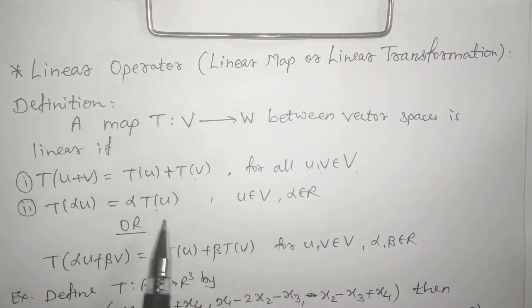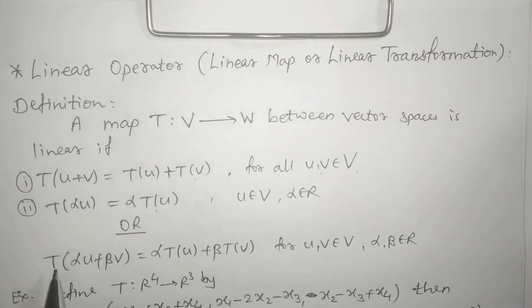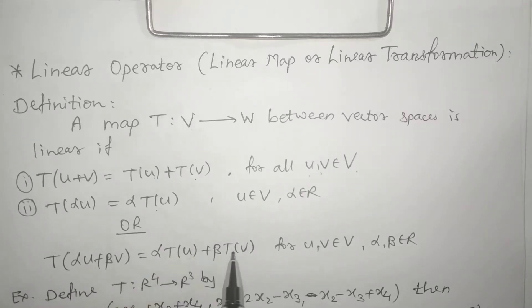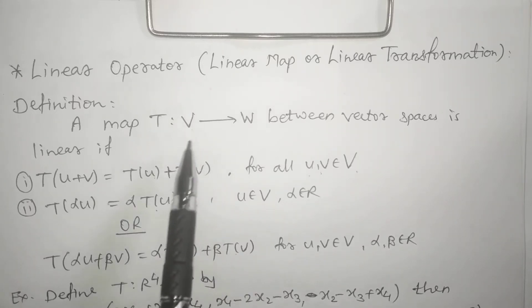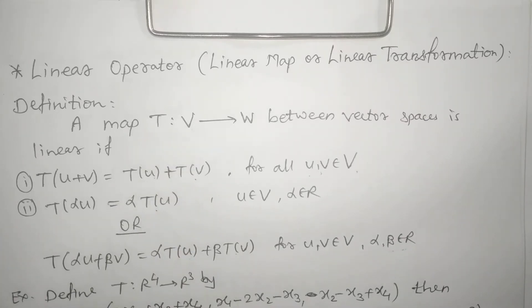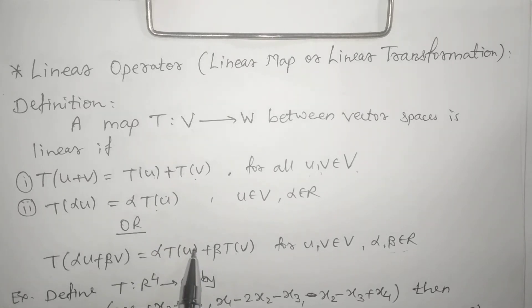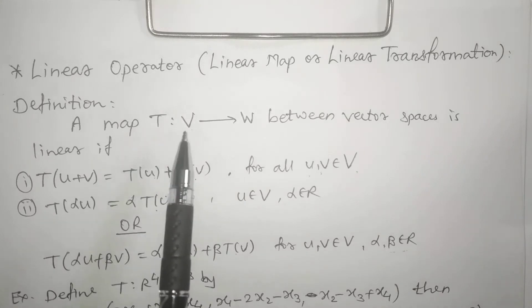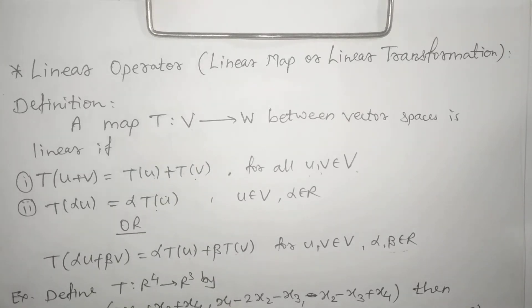There is also a combined condition for these two: T of alpha U plus beta V is equal to alpha into T of U plus beta into T of V, where U and V are vectors from vector space V and alpha and beta are real numbers. If these two conditions, or this single combined condition, are satisfied, then we say that the given map T from vector space V to vector space W is a linear map, linear transformation, or T is called a linear operator.